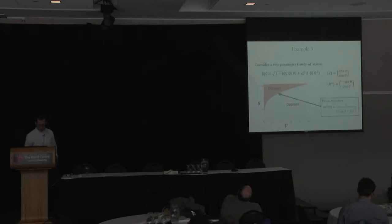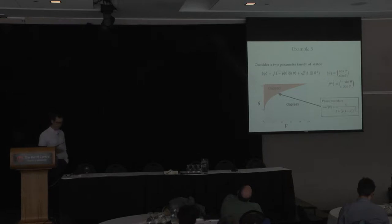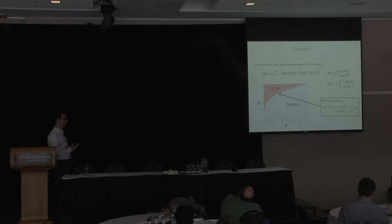You can compute, for example, the phase boundary at some curve. But what's going to be important for illustrating the proof later on is only that this is some two-parameter family of states and that we can plot things. That's all I would like you to remember.